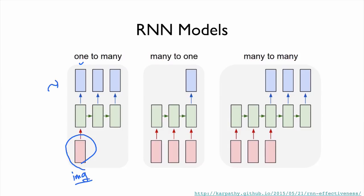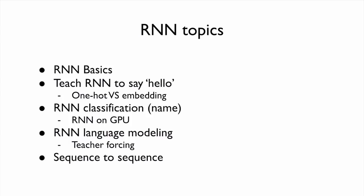We can also make our RNN a many-to-one model. We feed a lot of words, like a sentence, and then predict the sentiment of the sentence — whether it's sad, happy, or not happy. We can also compose RNN for many-to-many output. This is often used for translation, like providing a sequence in Korean and translating it to English.